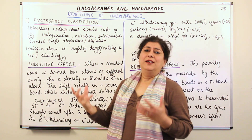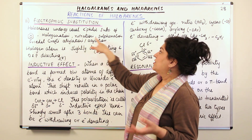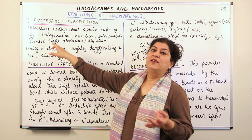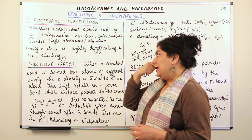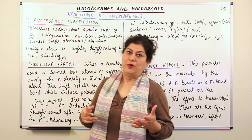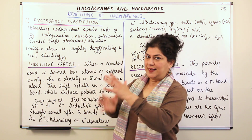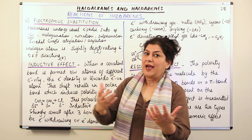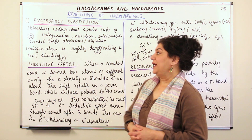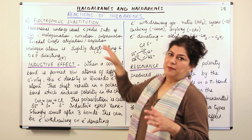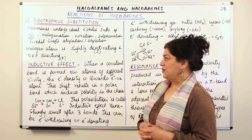What are the electrophilic substitution reactions? They are halogenation, nitration, sulfonation, and the Friedel-Crafts alkylation and acylation. We will be studying about these reactions in the next video. But right now, I will be talking about some basic things before I come to the actual electrophilic substitution reaction and the mechanism of these four reactions.